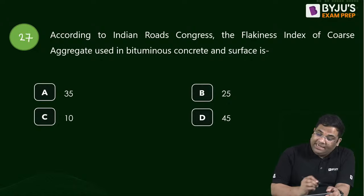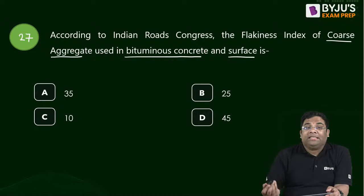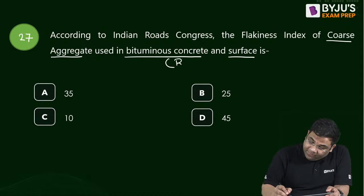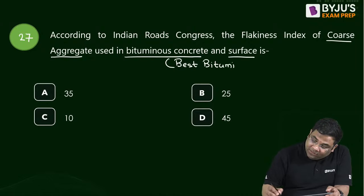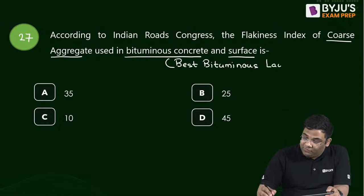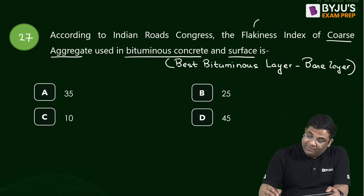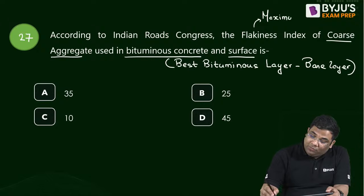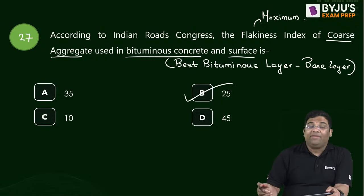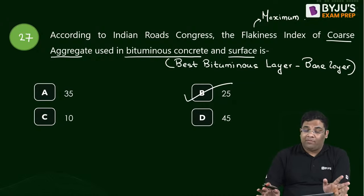Question 27: The maximum flakiness index of coarse aggregate used for bituminous concrete surface course is 25%. If the flakiness index exceeds 25%, the aggregate is rejected.